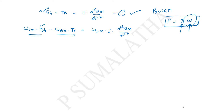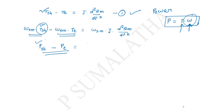The shaft torque produces shaft power Ps and the electromagnetic torque produces electrical power Pe. So the left side is now in electrical quantities. We also need to convert the right side to electrical quantities, which requires the relation between mechanical and electrical quantities.